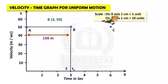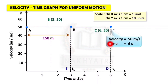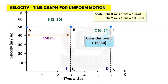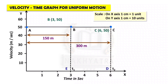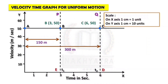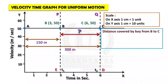The boy then jumps from point B to C. Consider point C at coordinates (6, 50): velocity = 50 m/s, time = 6 s. Distance up to C = 50 × 6 = 300 meters. So distance from A to C equals 300 meters. To find the distance from B to C: distance = AC − AB = 300 − 150 = 150 meters. So distance from B to C equals 150 meters.